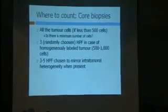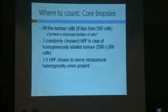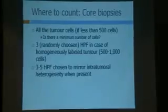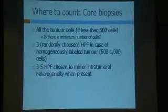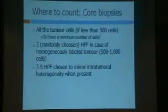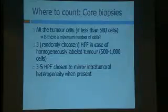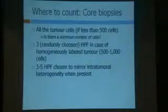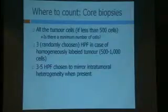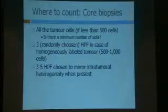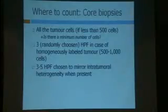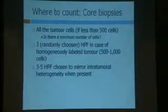So first of all, what we have discussed is where we count Ki-67. We will be discussing about heterogeneity in expression of Ki-67 in breast cancer. Let's start with the easy part, which is how to analyze core biopsies of breast cancer. The idea is that core biopsies include less than 500 tumor cells, which appear sometimes. We will count and assess Ki-67 in all the tumor cells. If there are more than 500 cells, then we will count Ki-67 in randomly chosen high-power fields if the tumor is homogeneously stained.